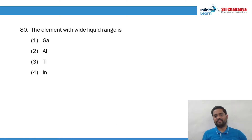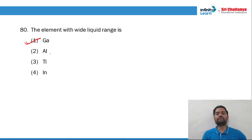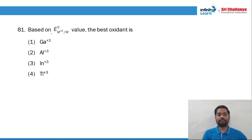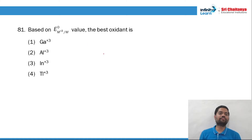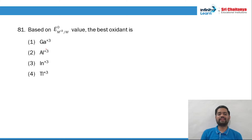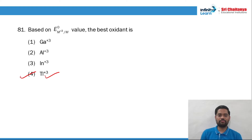Question 80: the element with the widest liquid range is gallium. Memory-based question. Question 81: based on standard reduction potential of M³⁺ to M, the best oxidant in group 13 — always remember, the best reductant is aluminium and the best oxidant is thallium. So option number 4 is the right answer.